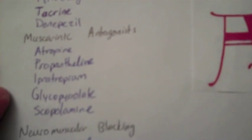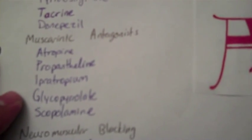The next one is the muscarinic antagonists. I have a picture of an A and a pig because the initials A, P, I, G, and S help me remember them. So we have atropine, propantheline, ipratropium, glycopyrrolate, and scopolamine.